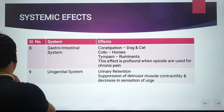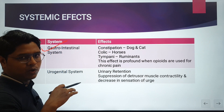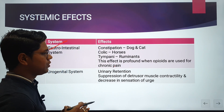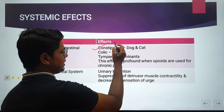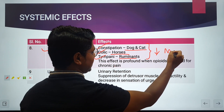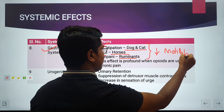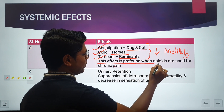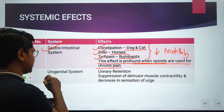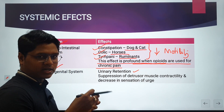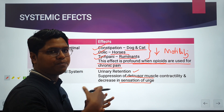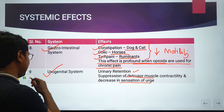Gastrointestinal system: these effects are more profound when opiates are given chronically for long-term pain management. They cause constipation in dogs and cats, colic in horses, and tympany in ruminants — all due to reduced intestinal motility. Urogenital system: opioids cause urinary retention because they reduce the contractility of detrusor muscles and reduce the urge or sensation to urinate.